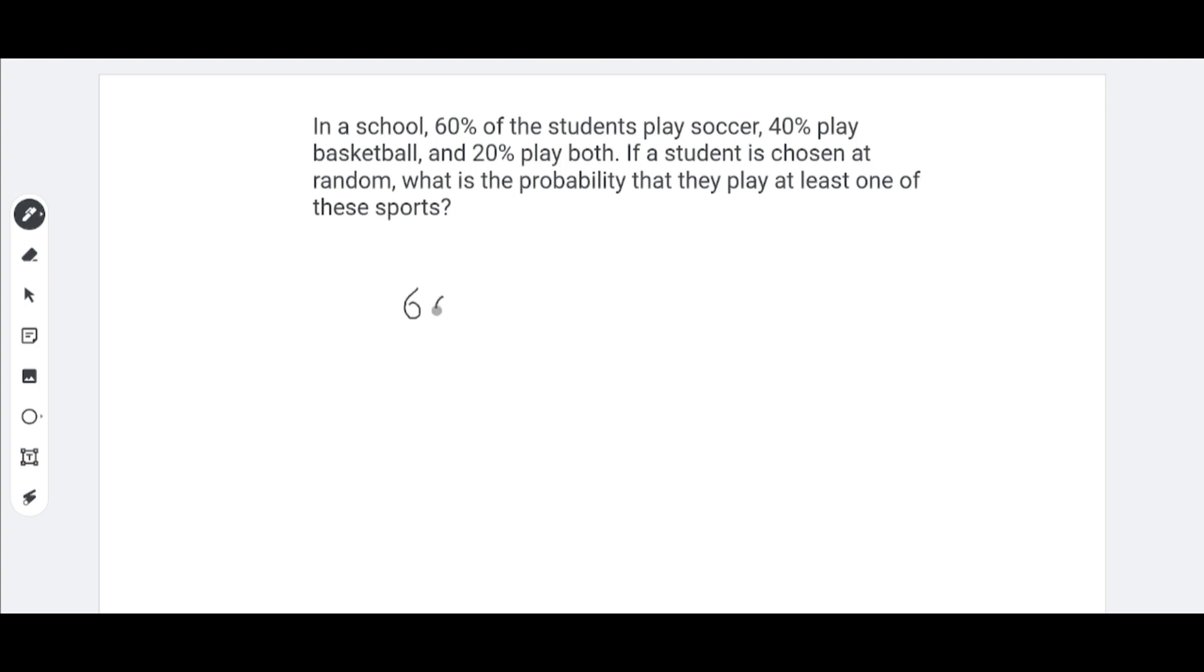So, we have 60% playing soccer, and then 40% playing basketball. So, we can add these, but then we need to subtract the 20% that play both because we're over counting them. So, we can subtract it from either side. I'll just subtract it from 40. So, 60 plus 40 minus 20, which would be 60 plus 20, which is 80. So, 80% of the people in this school play at least one of these sports.